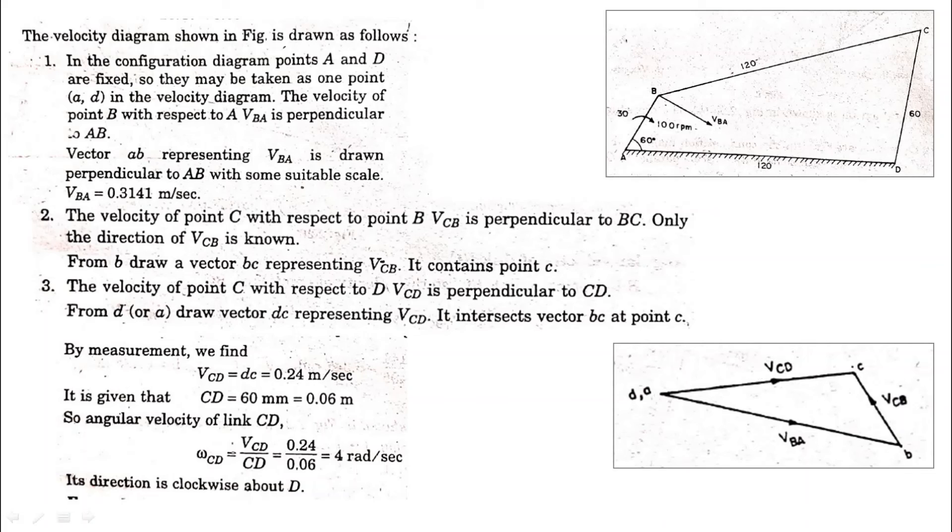Then we convert it to meter per second. So you will find that the value of vcd is 0.24 meter per second. Then we know that the length of cd is given. Using v is equal to r omega, we can calculate omega. So omega is equal to v upon r, and this gives us the answer in radians per second.